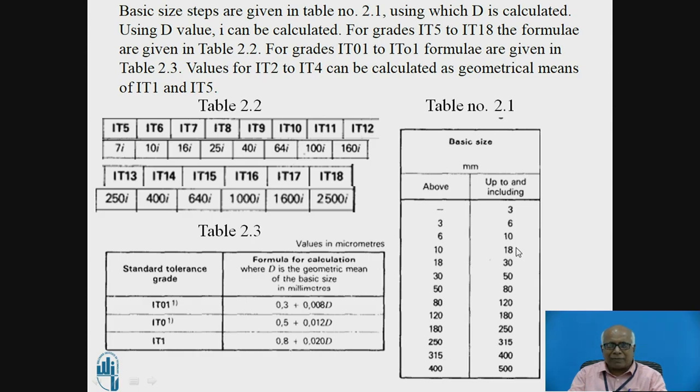So that way we can calculate for each basic size. And the upper step is contained in that particular class means if it is 18, so that will consider 10 to 18. If it is 30, then that will be considered lying in this class 18 to 30. So that way we calculate for the value of D.